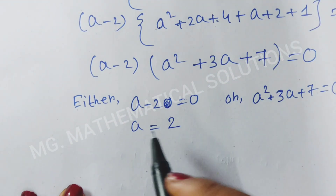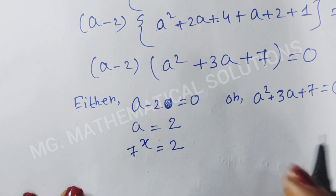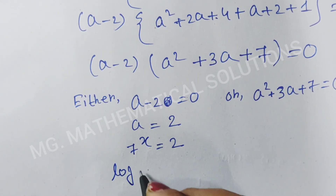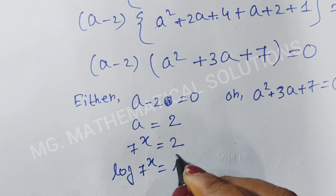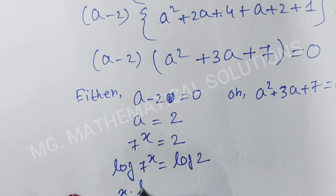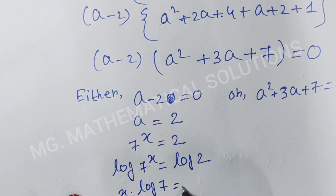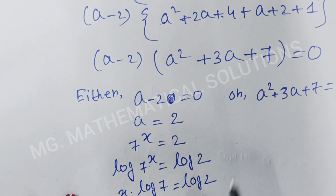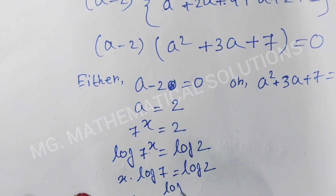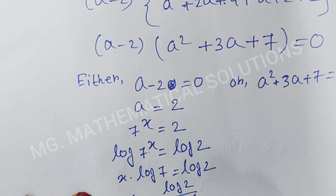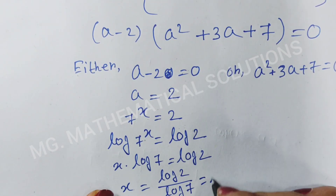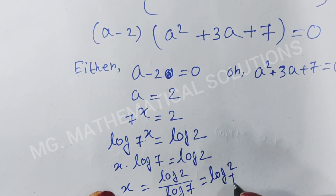Here 7 to the power x equal to 2. Taking logarithm both sides, log of 7 to the power x equal to log of 2. So x times log of 7 equal to log of 2. Therefore x equal to log of 2 divided by log of 7, that means x equal to log of 2 base 7.